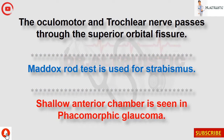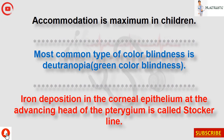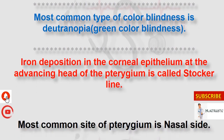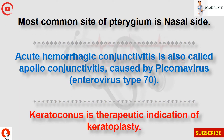Shallow anterior chamber is seen in phacomorphic glaucoma. Accommodation is maximum in children. Most common type of color blindness is deuteranopia, which is green color blindness. Iron deposition in the corneal epithelium at the advancing head of the pterygium is called Stocker line. Most common site of pterygium is the nasal side.